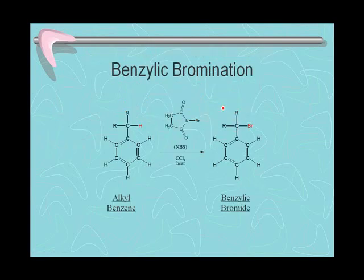This reaction involves replacement of a benzylic hydrogen with a bromine atom. It is simply the radical halogenation reaction, which utilizes N-bromosuccinimide as a source of bromine under conditions where we heat the reaction. The solvent often used is carbon tetrachloride, which contains no hydrogens, so we don't have to worry about halogenation of the solvent. Overall, this converts a carbon atom that is not a good electrophile into one that is a good electrophile.